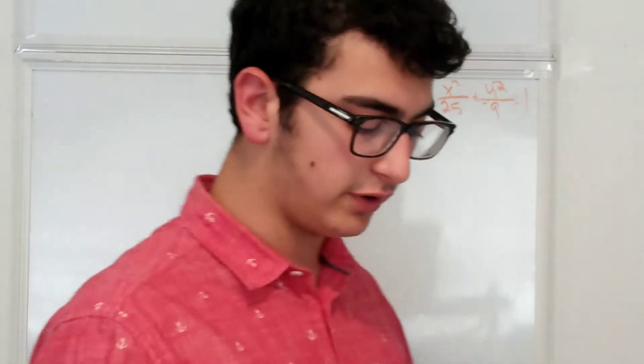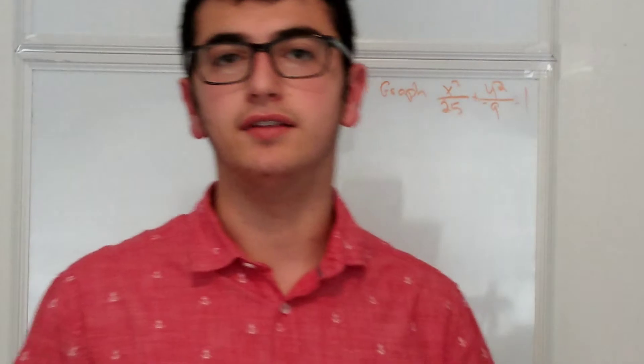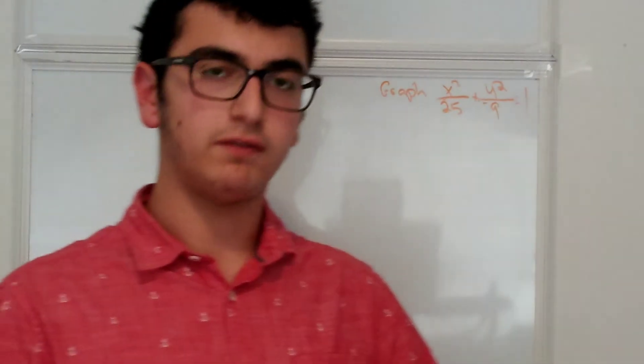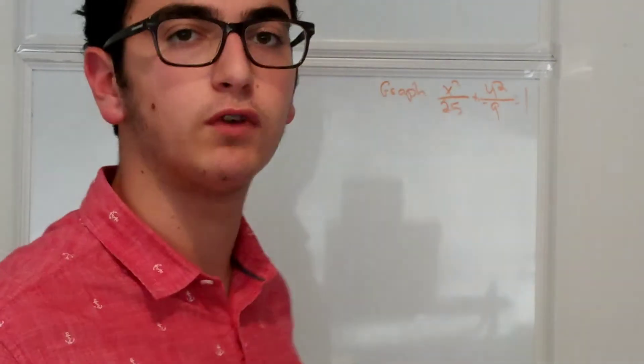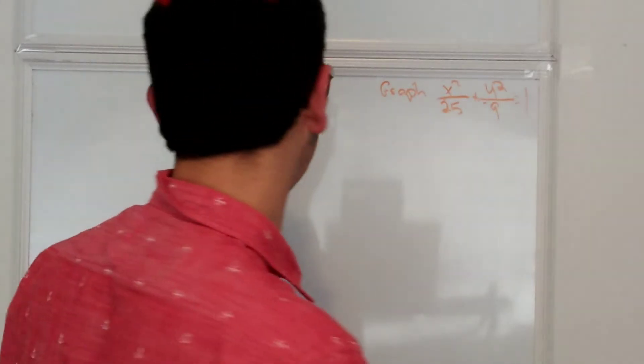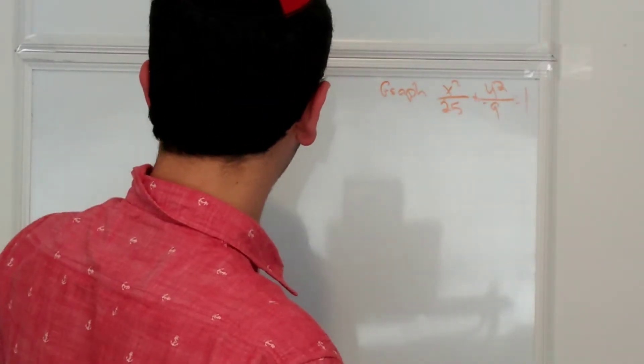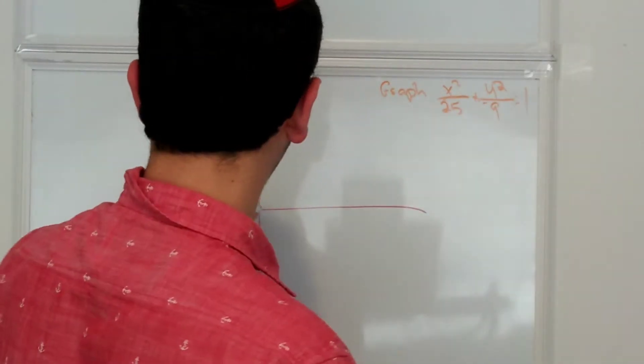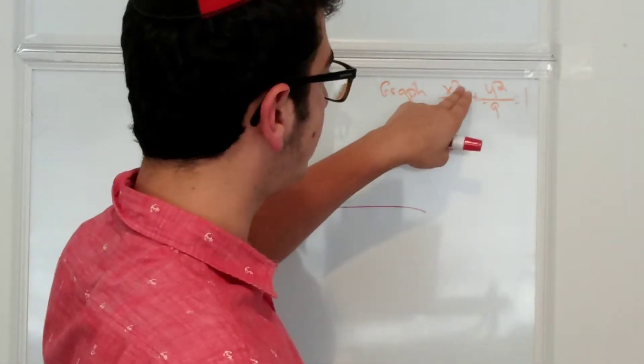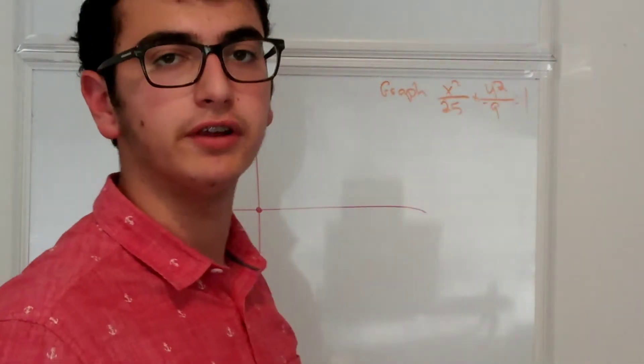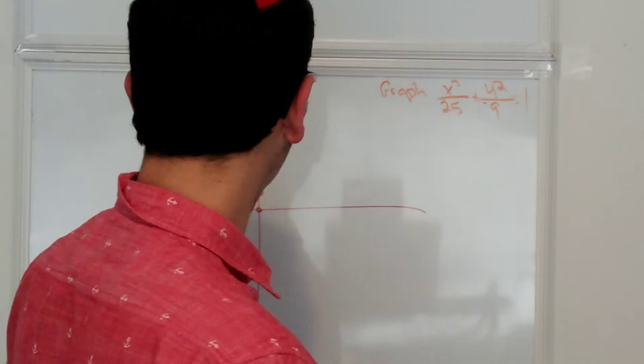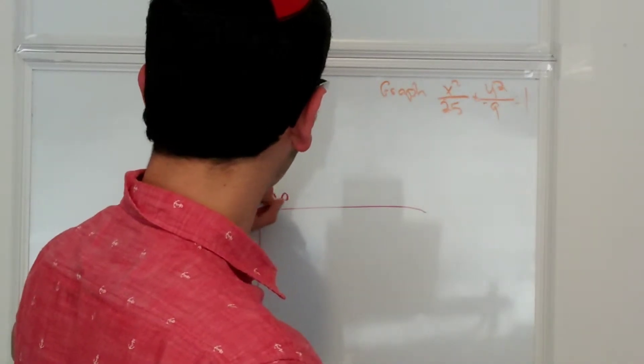So the first thing we're going to do is find out, well, first we're going to just say the center is 0, 0. So on our x, y coordinate, because since there's no x minus 3 or y plus 2 or anything like that, the center is going to be 0, 0.